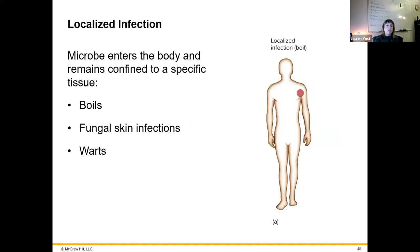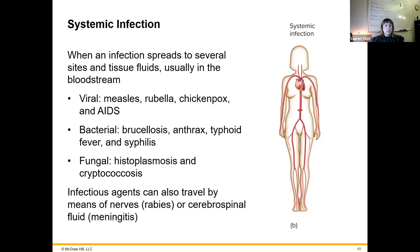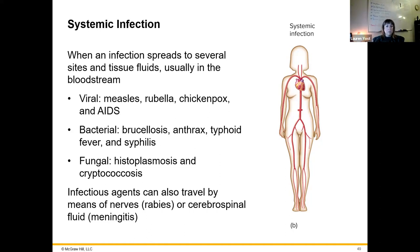Here are some patterns of infection. A localized infection is where the microbe enters the body at a specific location and stays there — an example being boils. A systemic infection is when an infection spreads to several sites and body tissue fluids, often including the bloodstream. Septicemia is when a bacterial infection is flourishing in the blood. Viral examples include measles, rubella, chicken pox, and AIDS. Bacterial examples include brucellosis, anthrax, typhoid fever, and syphilis. Infectious agents can also travel by means of the nerves — as with rabies, which multiplies at the bite site and travels through nerves into the brain and salivary glands, which is why it's transmitted through saliva.